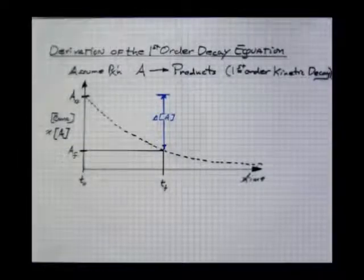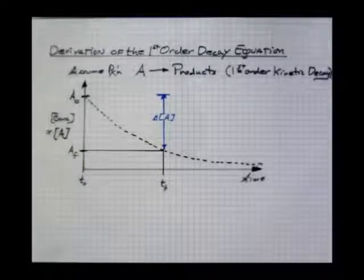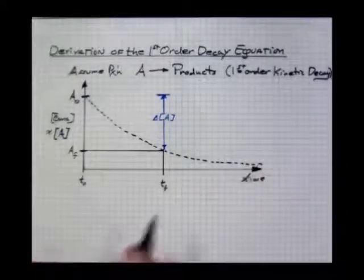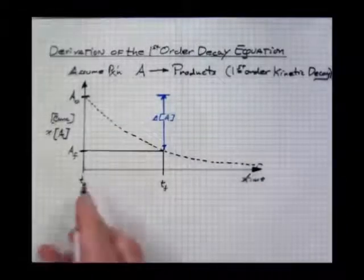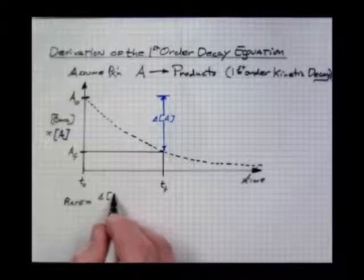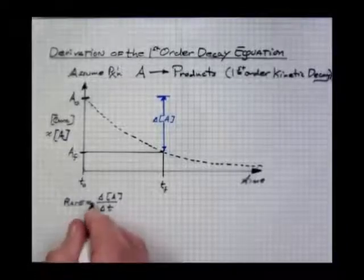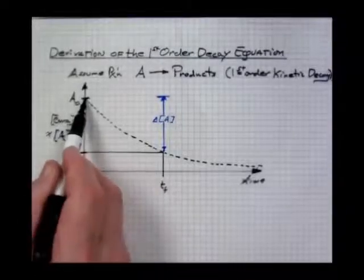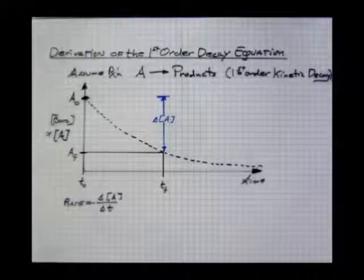So now we want to establish or derive the classic first order decay equation. It goes like this. Since we're talking about kinetic rates and kinetic decay, let's start out by defining the rate of decay of this reaction. So that is rate is simply a change in concentration of A over a change in time. Now this needs to be negative indicating a decreasing kinetic rate.